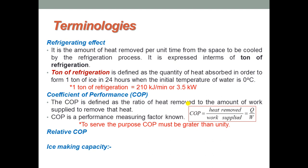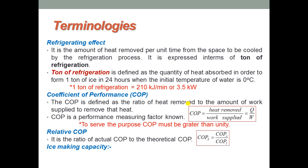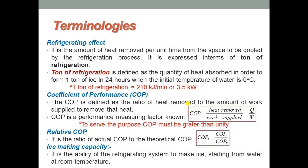COP must always be greater than unity to serve the purpose. Next is relative COP — it is the ratio of actual COP to theoretical COP. And the last term is ice making capacity, which is the ability of the refrigerating system to make ice from water at room temperature.